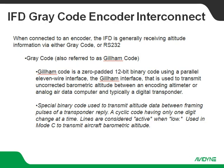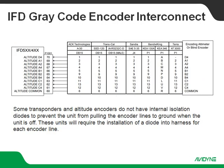Here's the interface with the IFD. Some transponders and altitude encoders do not have internal isolation diodes that prevent the unit from pulling the encoder lines to ground when the unit is not powered on — when it's off. Those units do require the installation of a diode into the harness for each encoder line. So with 11 lines here, each one is going to have to have an isolation diode. The IFD has its own internal isolation diode, so we don't have to worry about that.